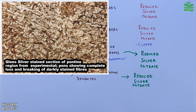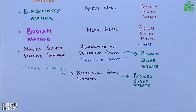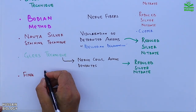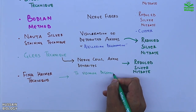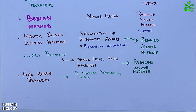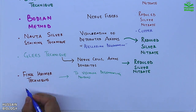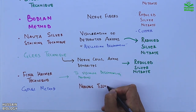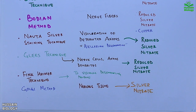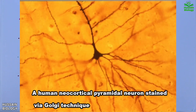In this diagram we can see the pontine region of the brain, which shows complete loss and breaking of darkly stained fibers. The fifth technique is the Pinkus-Heimer technique, used to visualize degenerating neurons using reduced silver nitrate as a reagent. The last one is the Golgi method, used to visualize neurons by using silver nitrate as a reagent, as shown in the diagram.